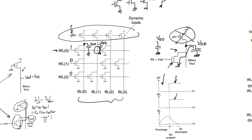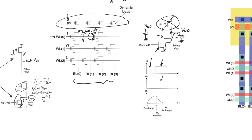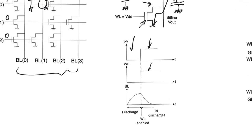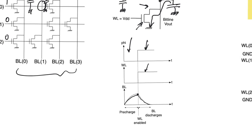The bit line pre-charges to VDD during the pre-charge phase and may or may not discharge to zero during the evaluate phase. In the waveform, barely enough time is allowed for the bit line to charge or discharge — but barely enough is as good as enough.